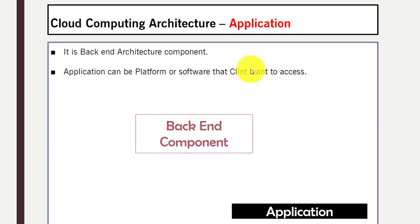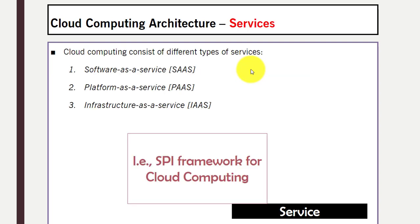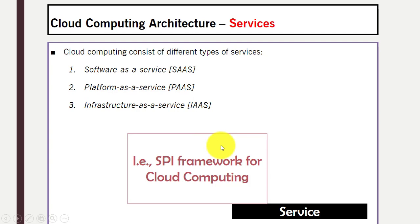Application is a back end architecture component. An application can be a platform or software that the client wants to access. Then we have different services provided on the cloud like Software as a Service, Platform as a Service, and Infrastructure as a Service — also known as the SPI framework for cloud computing — which we will cover in a different video.